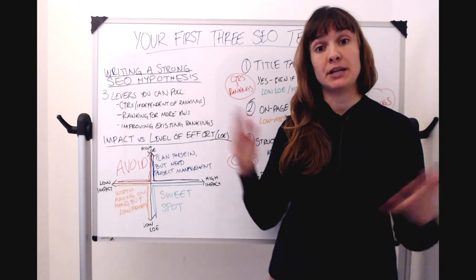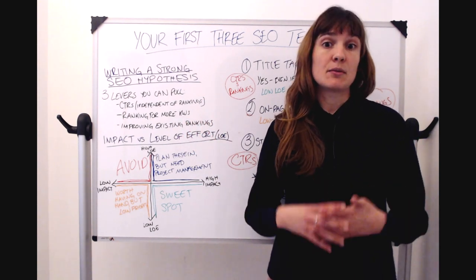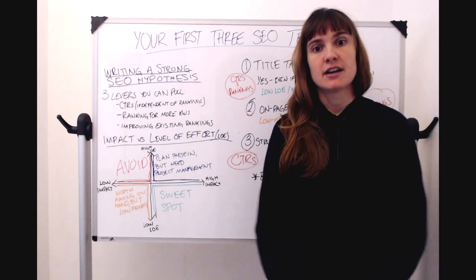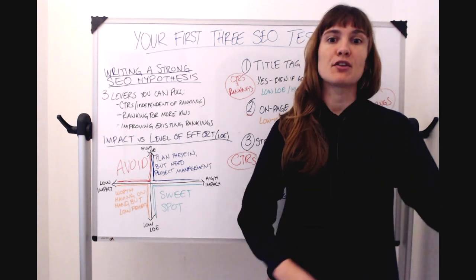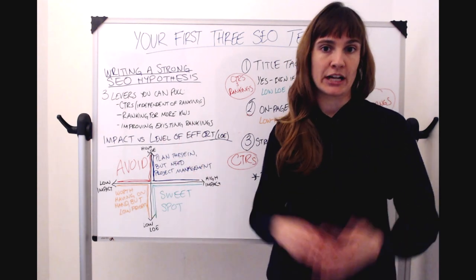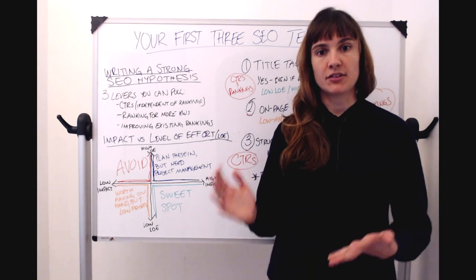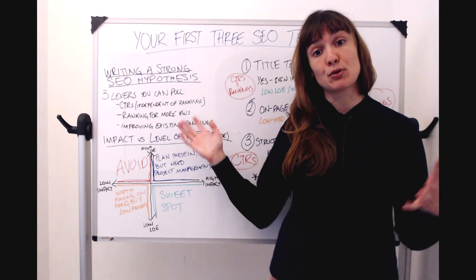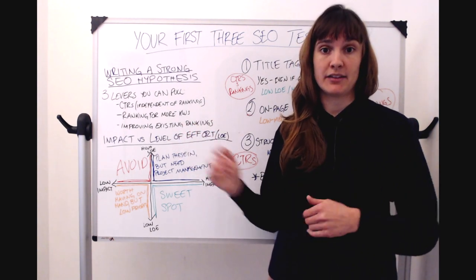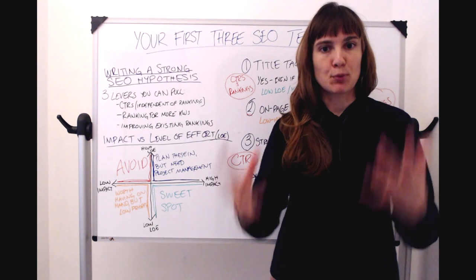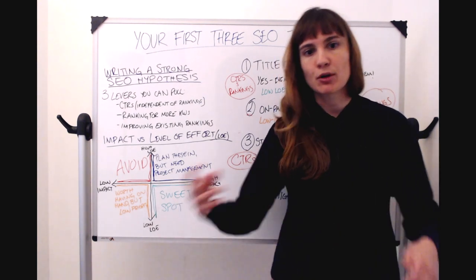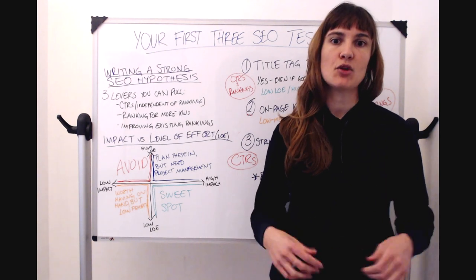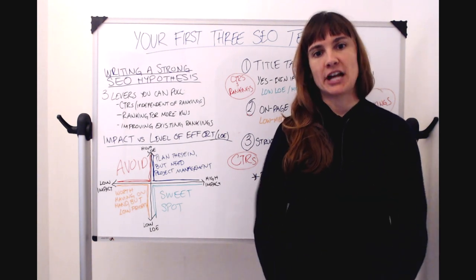Next, there's ranking for more keywords. That's ranking for keywords that you didn't before. It's improving your organic reach. So if you're ranking for more keywords, you're in front of more people, that's probably going to drive more organic traffic to your website. So that's our second lever that we can pull. Our last lever is improving our existing rankings. So that's links, improving core web vitals, adding more content, all those big known ranking factors that we can target with SEO tests. That's a big driver of organic traffic.